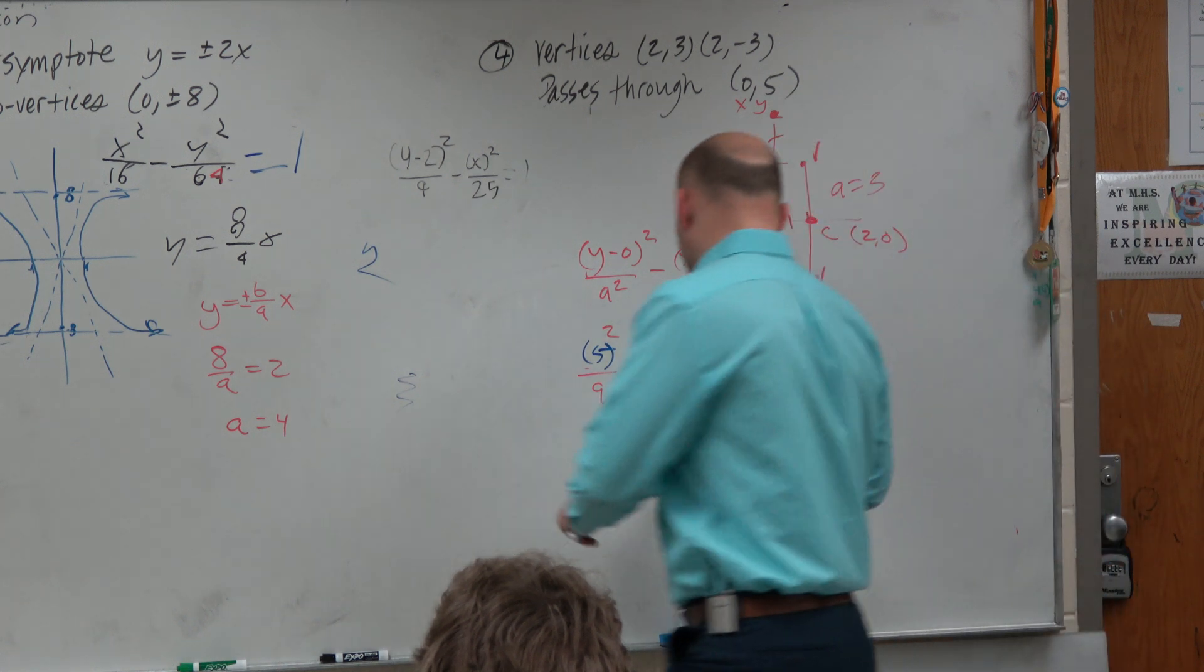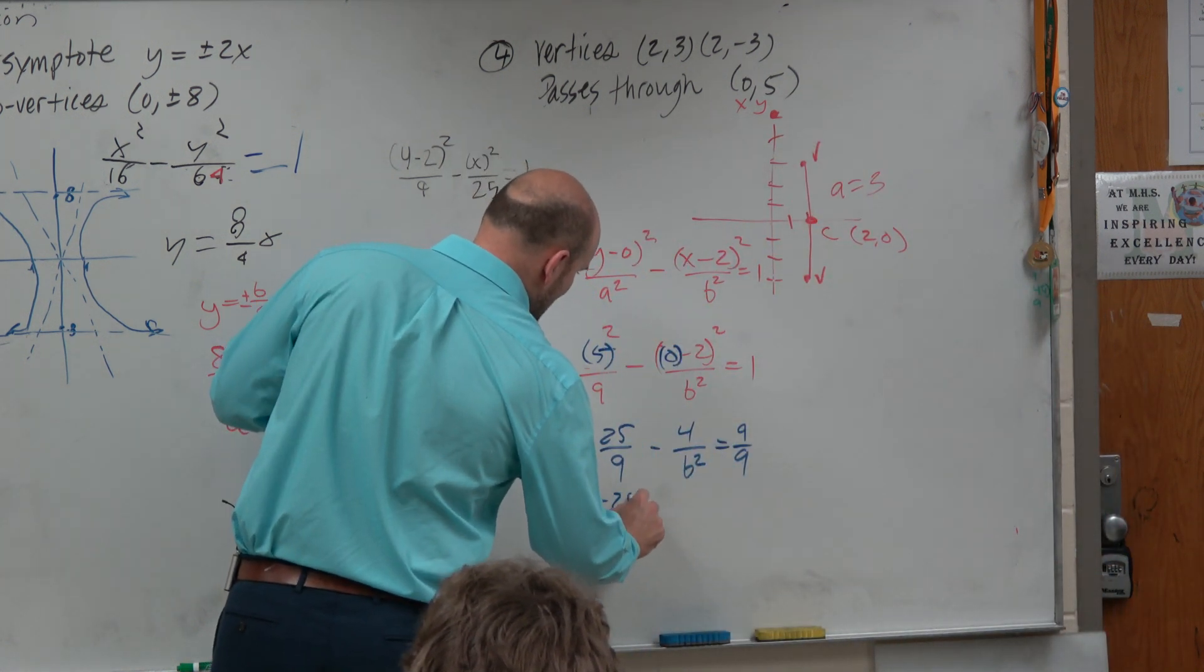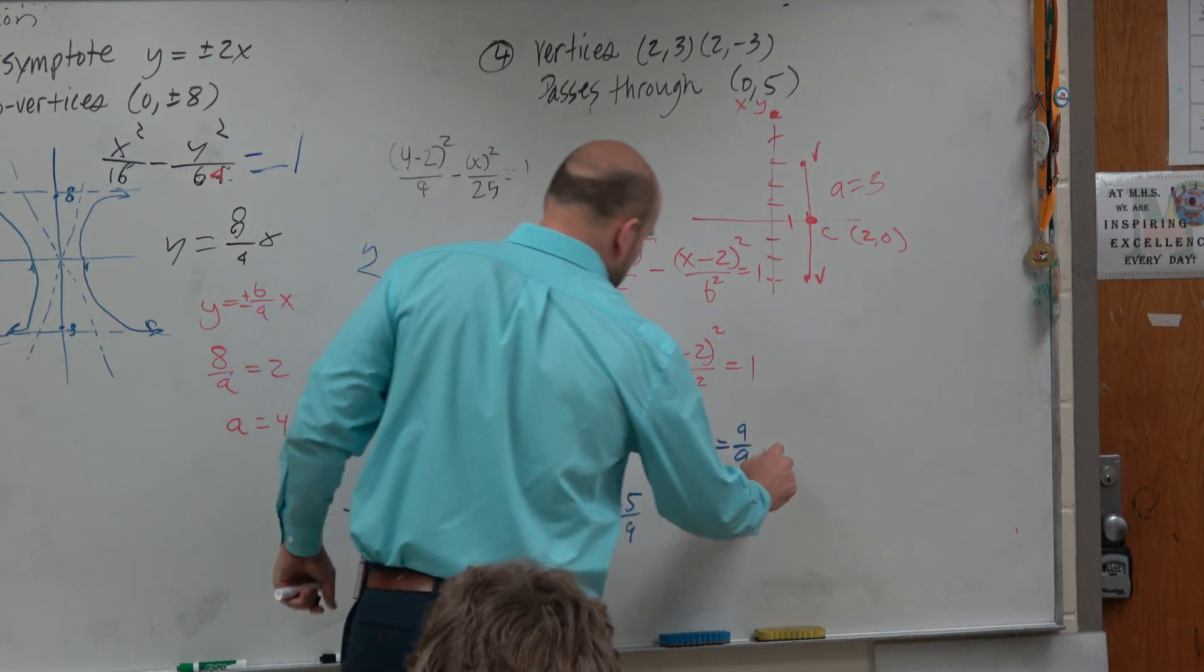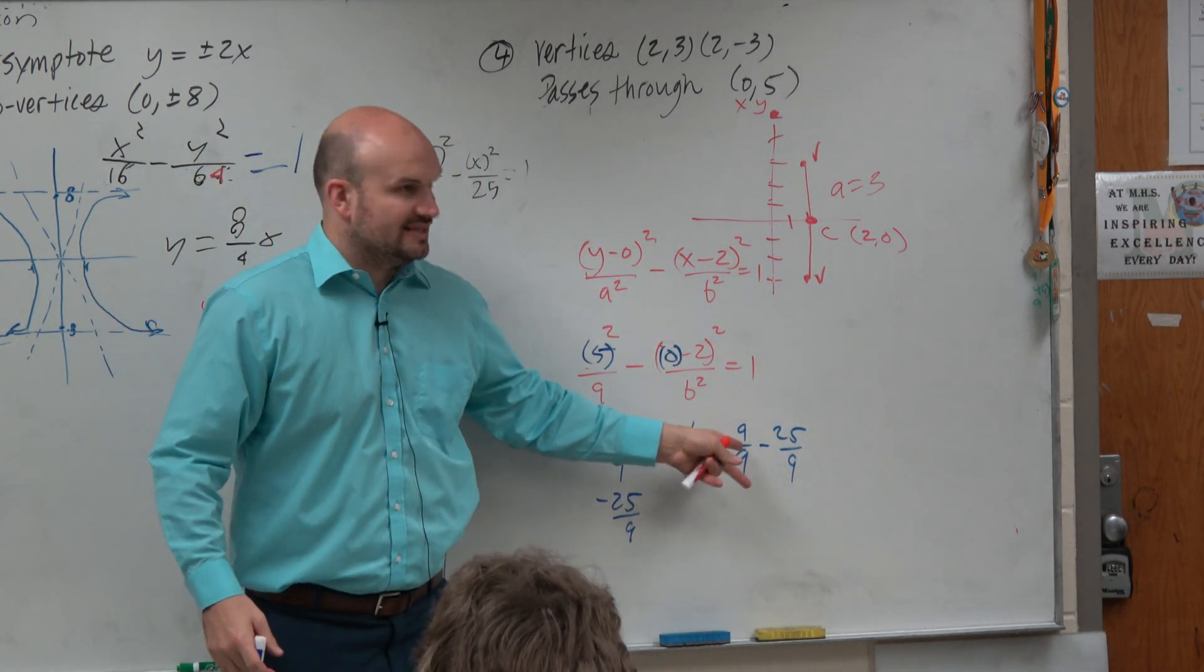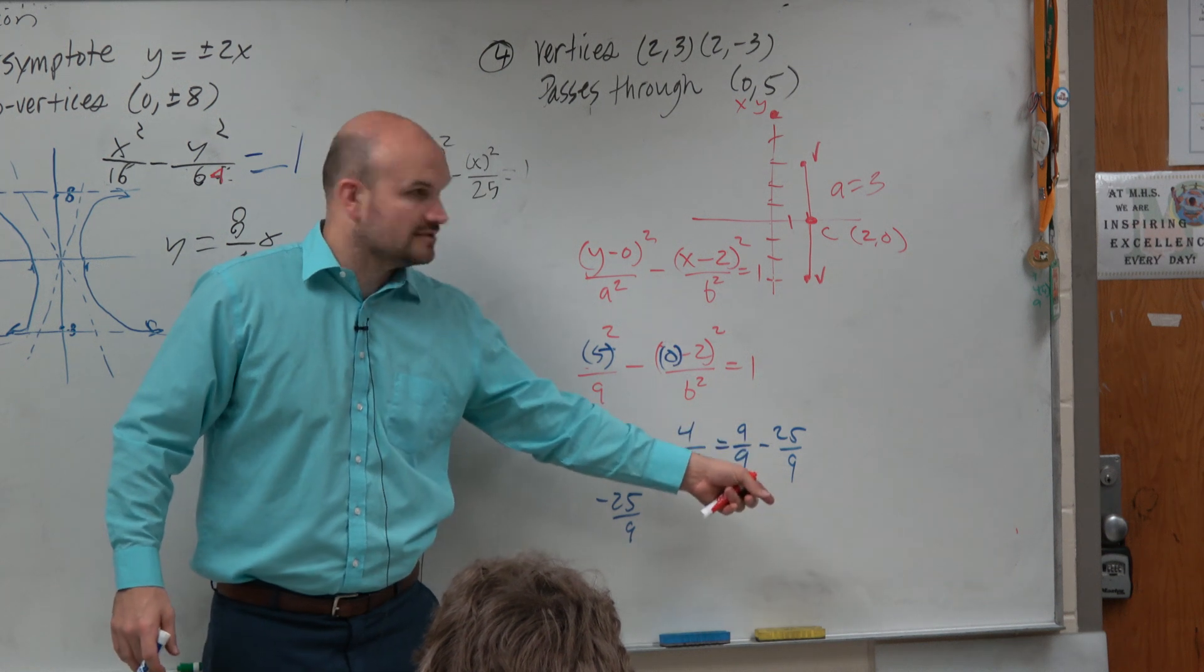The reason why I'm doing that is I know to solve for b squared, I need to subtract a 25 over 9 on both sides. So by rewriting my 1 as a denominator with 9, this is a little bit easier now to subtract. Right?